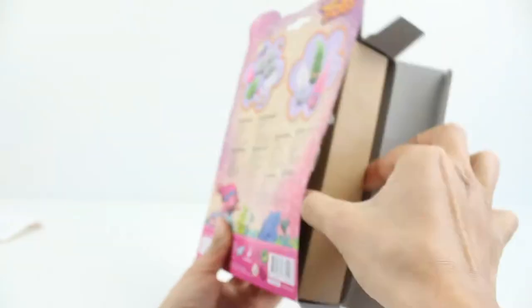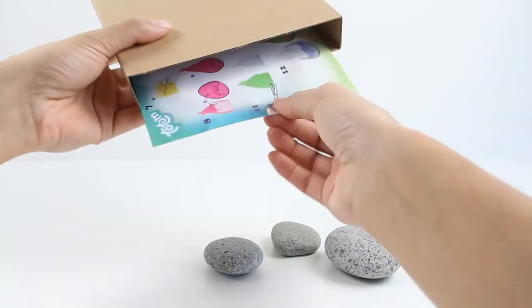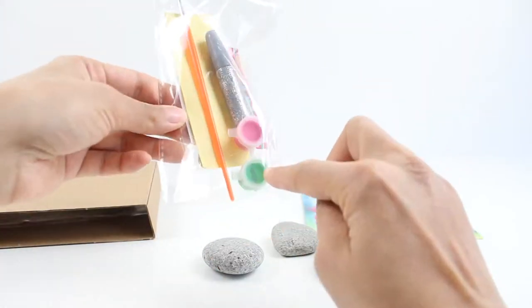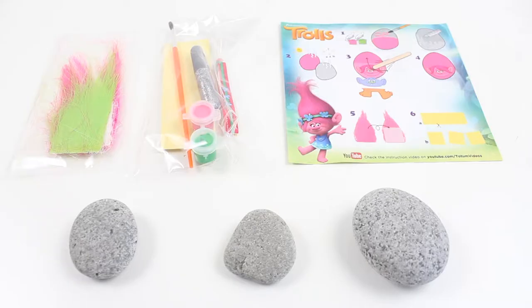And this is the contents of the box. Let's cut it open and have a look. Oh, I see the rocks already. One, two, three. Instructions, some faces and paints and brushes. Oh, and hair! So this is the content of our box.